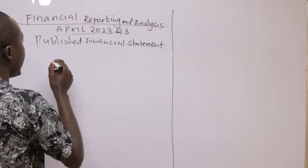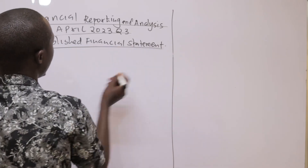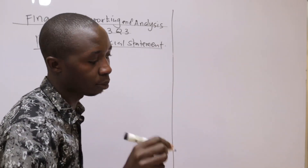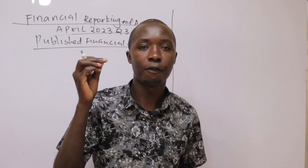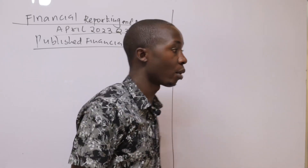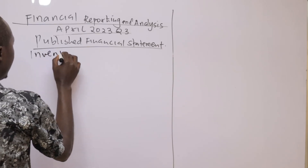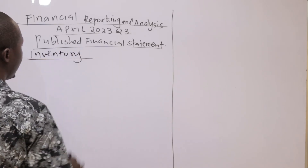In the published financial statements, you can be asked to prepare the statement of profit or loss, statement of financial position, statement of changes in equity, and besides a cash flow statement. If they test a cash flow statement in the coming sitting, you will not be told to also prepare the statement of profit or loss and financial position. Let's go back to additional information number one, where they were talking about inventory.